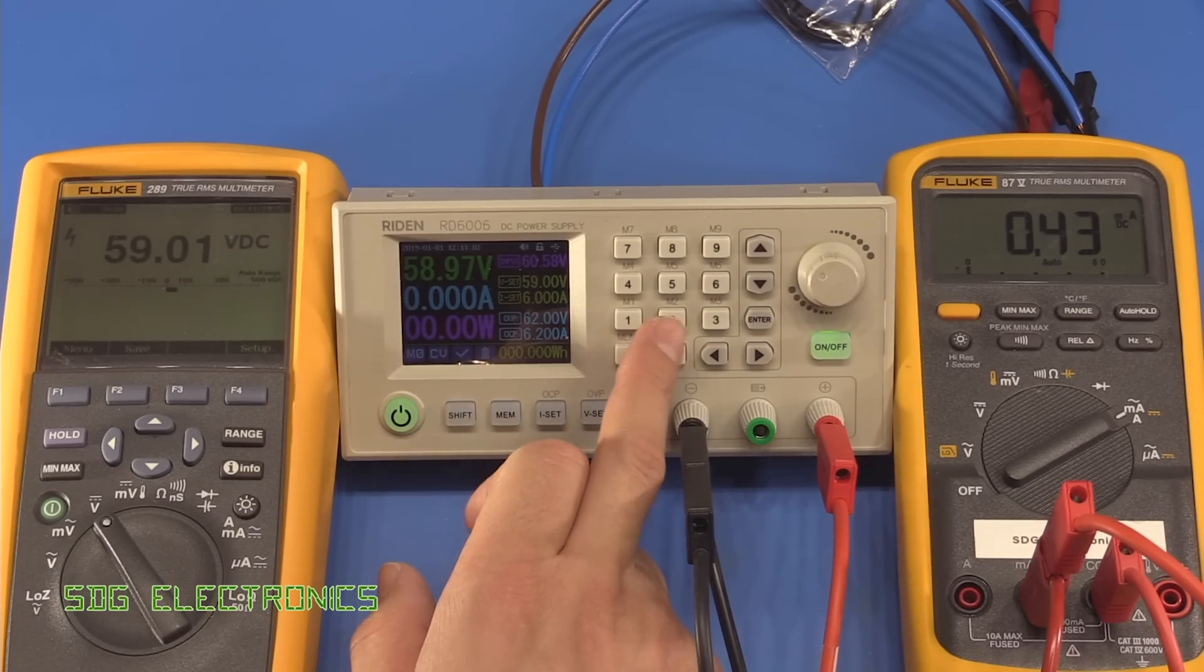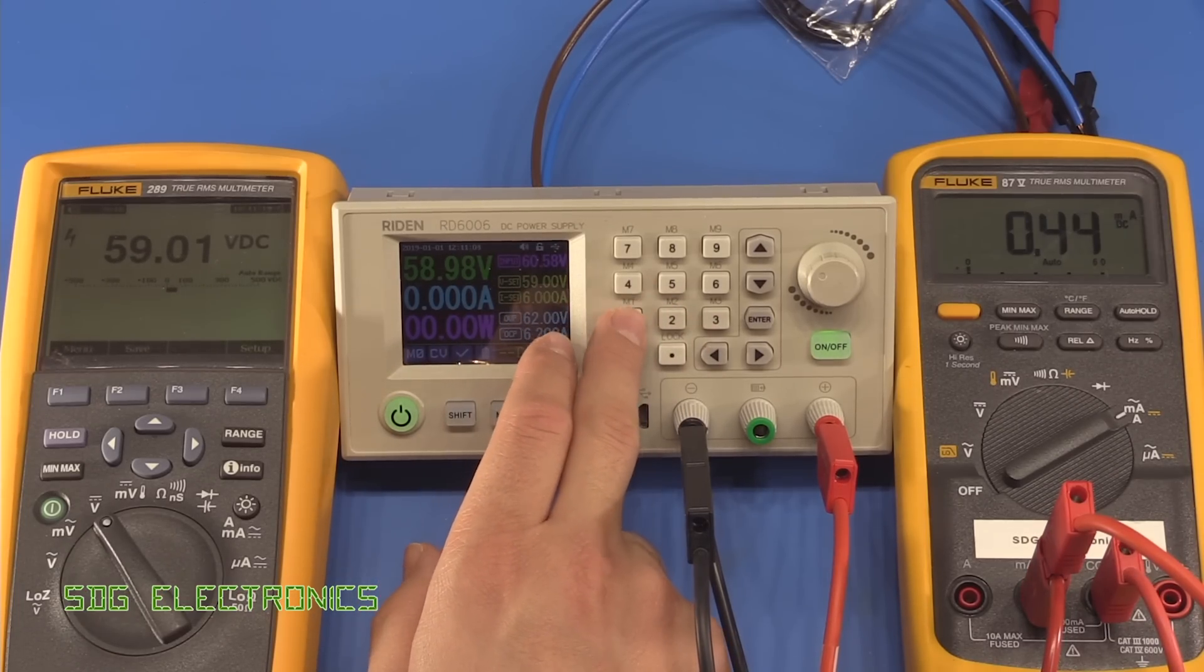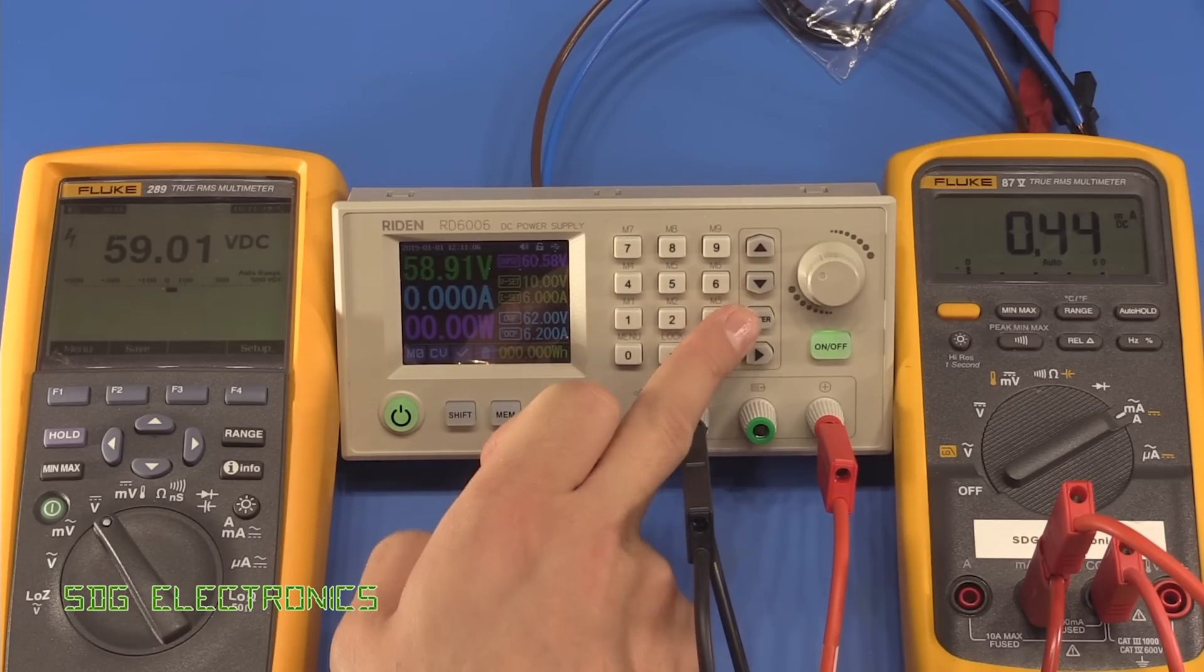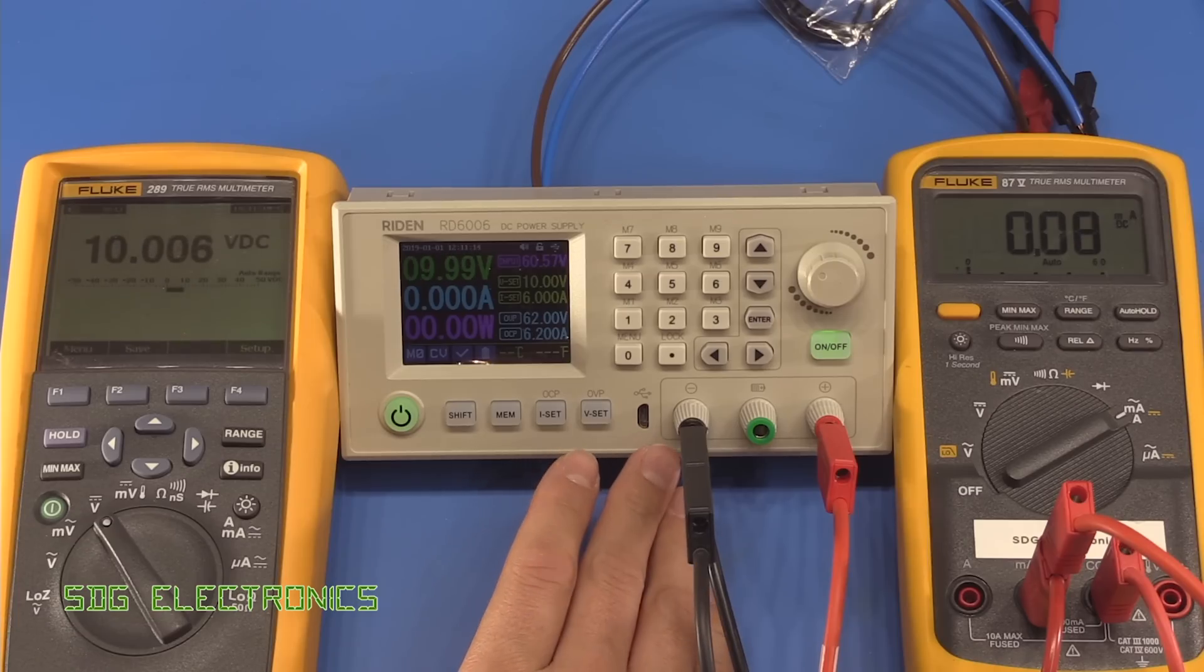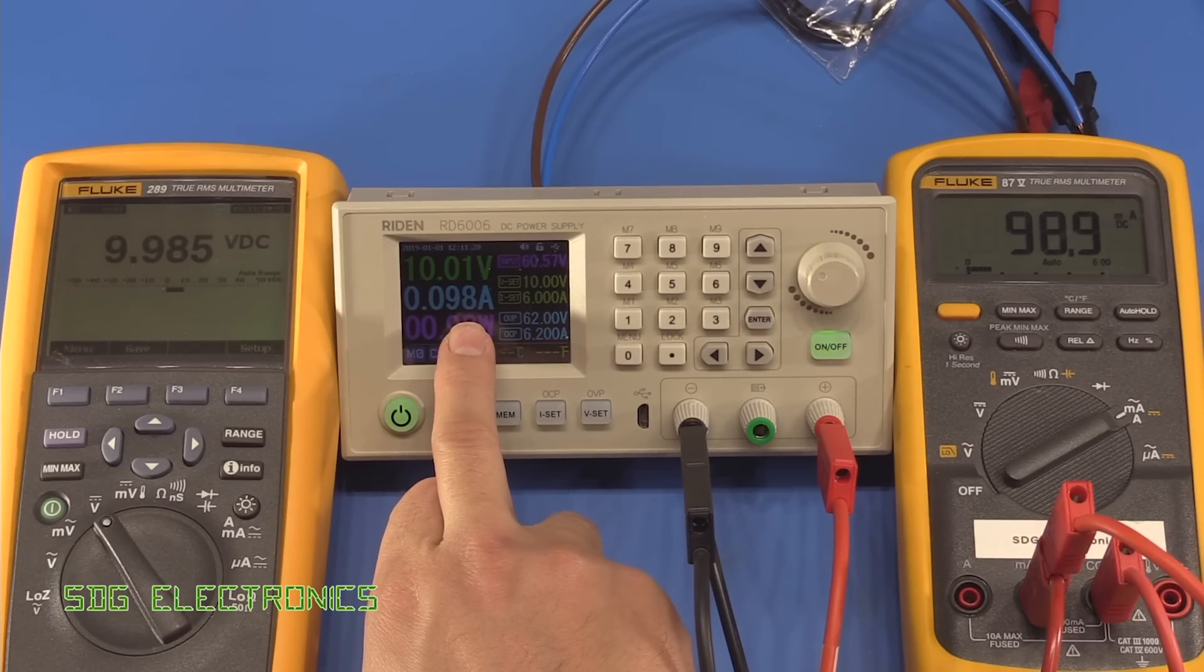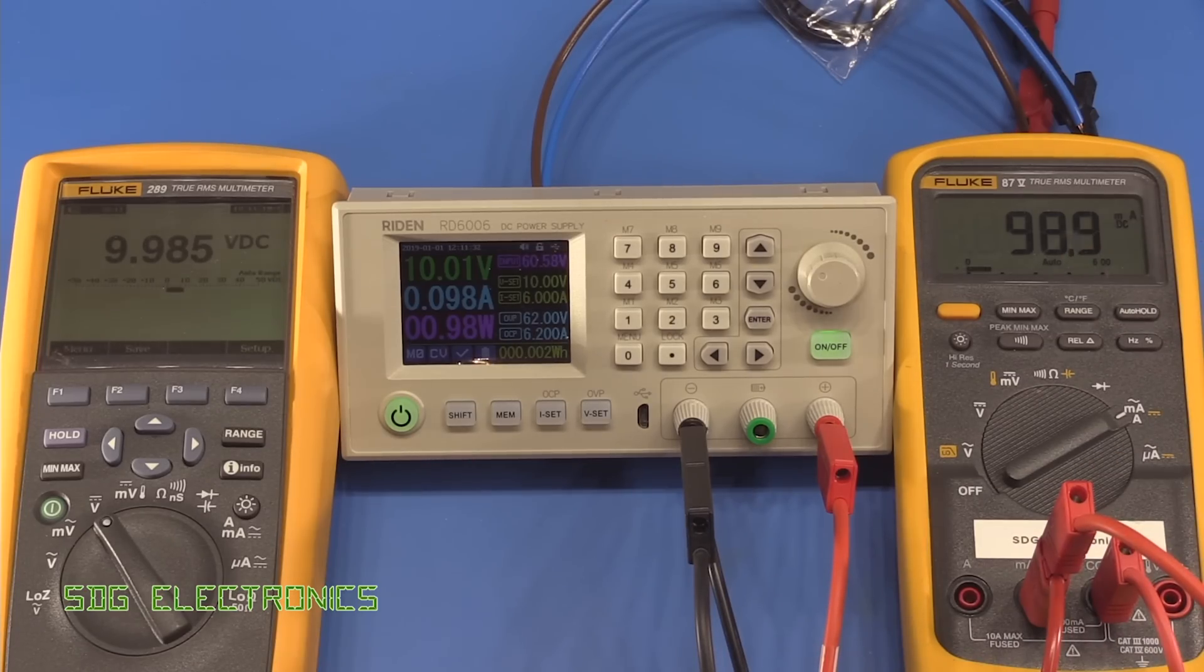Let's try it under load, so we'll drop it back down to something fairly reasonable. It takes a little bit of time to settle, so it's clearly got some output capacitance on the output here. Then if we turn on the load, I think I preset this to about 100 milliamps. Yeah, so 0.098, 0.098, 0.0980 amps, and we're reading about 99 milliamps on the Fluke 87.